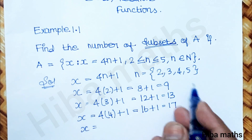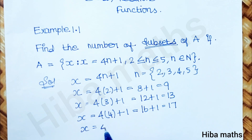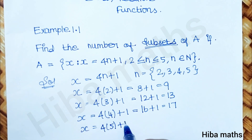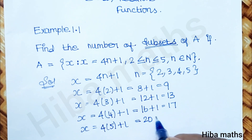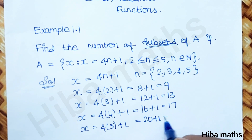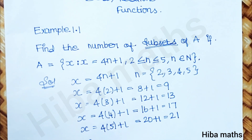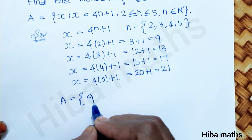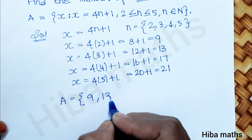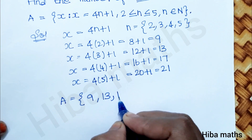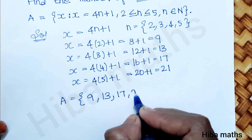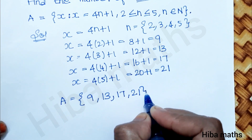For the last value, n = 5: x = 4×5 + 1 = 20 + 1 = 21. So the values of x are 9, 13, 17, 21, giving us set A = {9, 13, 17, 21}.